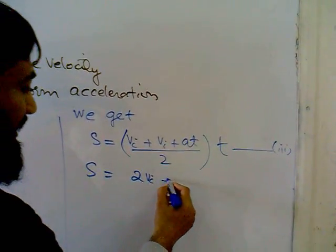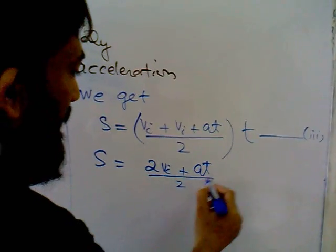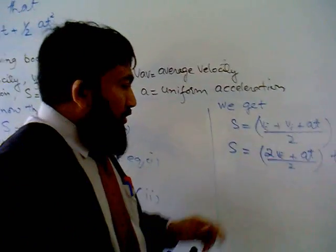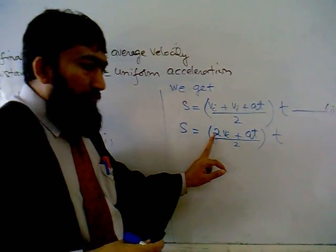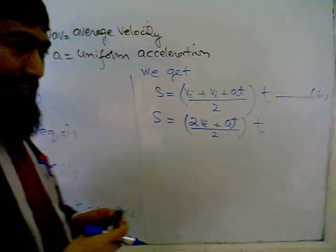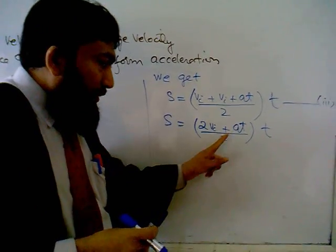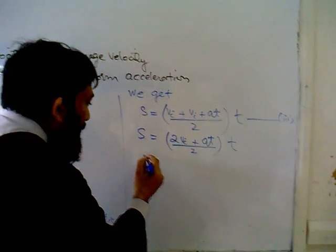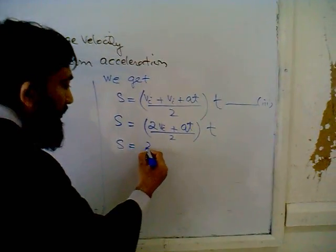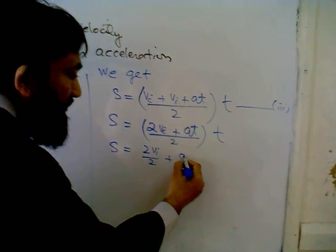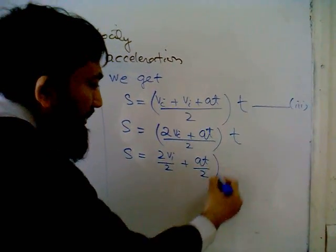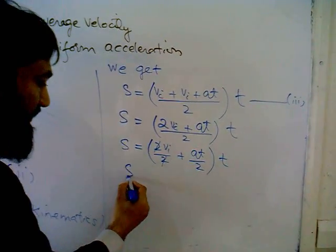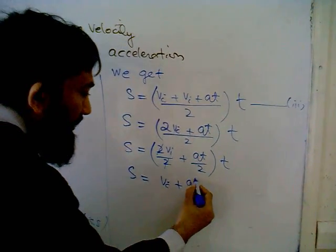Now be careful, do not cut this 2 with this 2, because this 2 is common. A mistake you do at this step is you cut this 2 with this 2, and this is wrong. So s = 2vi/2 + at/2, all multiplied by t. Now you can cancel: s = (vi + at/2) × t.